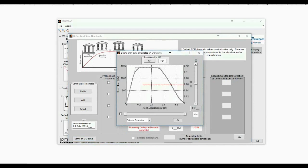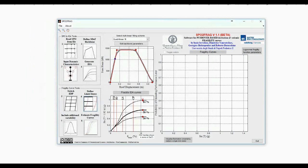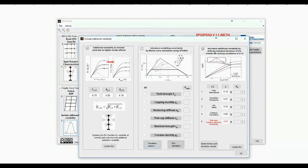This concludes definition of the limit state thresholds, which will now be plotted on the IDA panel. Next, we press the button labeled Include Additional Variability, and a new window with 3 panels appears. The panel to the left deals with additional variability near the yield point, for which we are going to use the values calculated by SPO2FRAG, so no changes there.